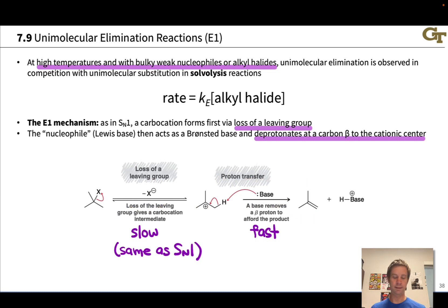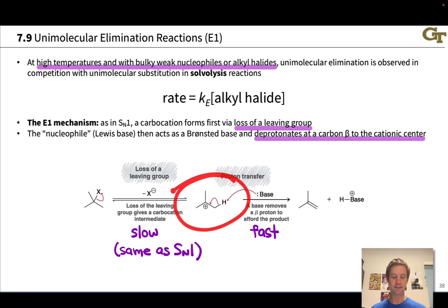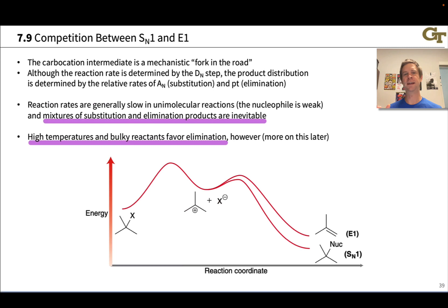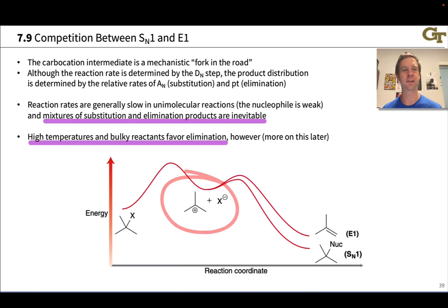The subsequent proton transfer is fast because it returns us to a neutral alkene product. The kinetics and rate effects of the reaction are entirely based on this first step. We've already talked about rate effects on the SN1 reaction, and similar ideas apply to E1 eliminations. For example, anything that stabilizes the carbocation or the leaving group X minus is going to accelerate E1 elimination. Because both SN1 and E1 involve a common carbocation intermediate, the first elementary step is the same in both mechanisms, and the reaction rate is determined by the loss of the leaving group.